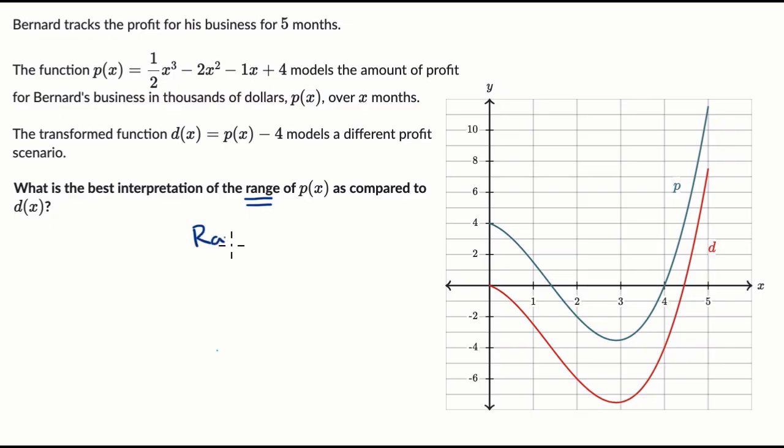So let's write, let's make a little column here. Range, and we have two functions here. We have our original function p(x), and then we have our new transformed function d(x), which is p(x) minus four.